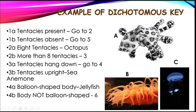We will not go to 1B because it says tentacles absent, while organism A has tentacles present. So 2A: eight tentacles? Let's count — 1, 2, 3, 4, 5, 6, 7, 8. Yes! It is the octopus. By the way, 'octa' means 8 and 'poda' means legs, so octopus has 8 legs. We have now identified organism A as the octopus.